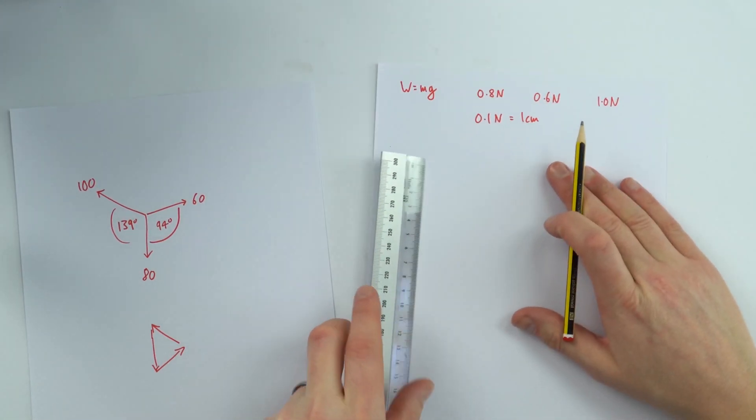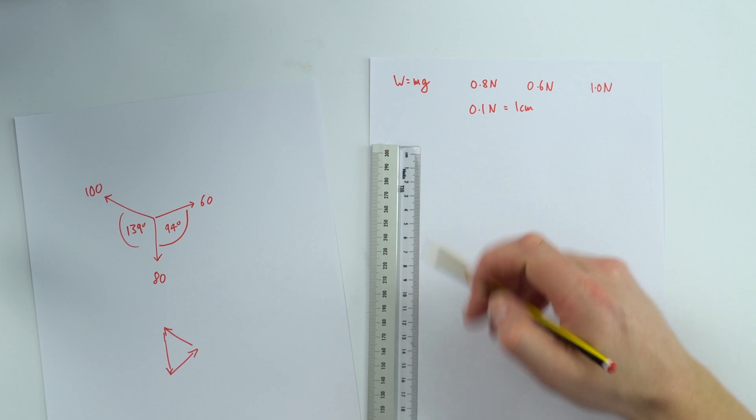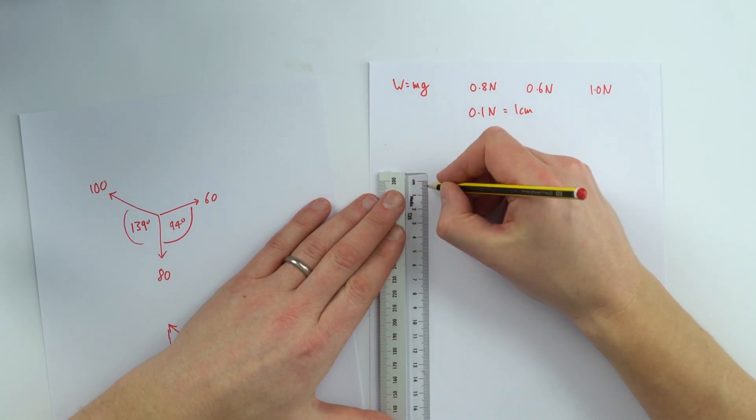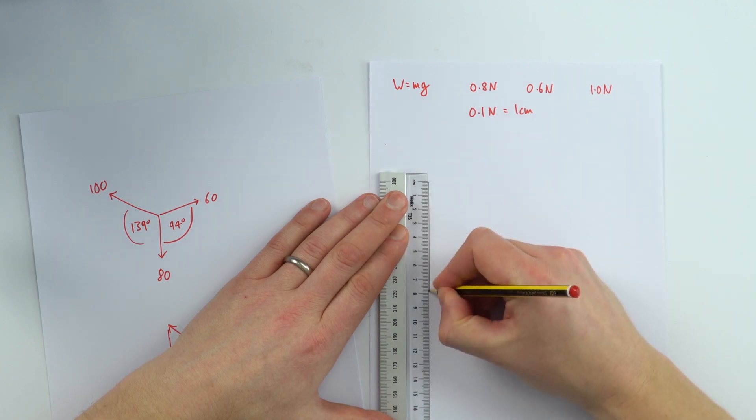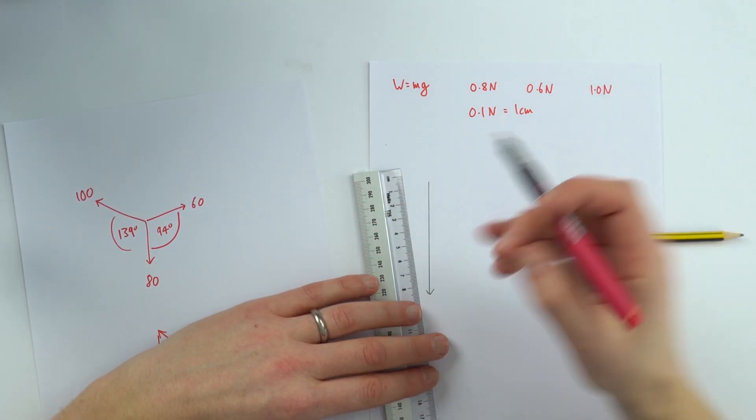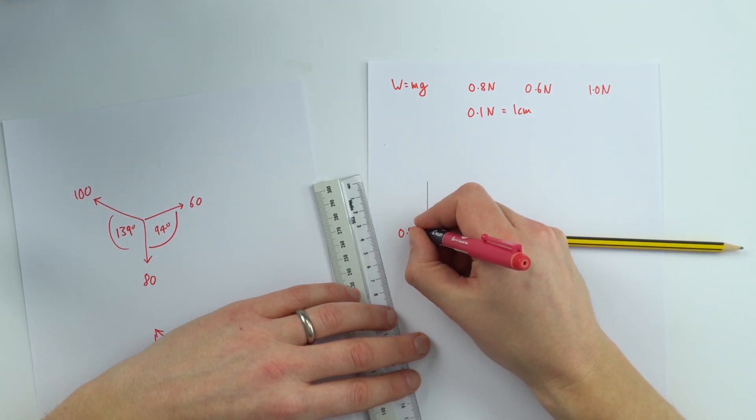Using a ruler and a pencil I'm going to start with my downwards force of 8. The scale that you choose depends upon the size of the forces. So that is the downwards force. I'm just going to label it over here, so that's 0.8 newtons.